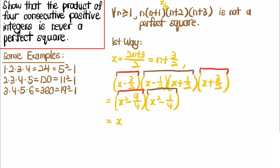Now let's expand the whole thing: we get x⁴ - (9/4 + 1/4)x² + (9/4)(1/4), which is x⁴ - (10/4)x² + 9/16. Recalling from the examples that this should be a square minus 1, I write + 16/16 - 1.